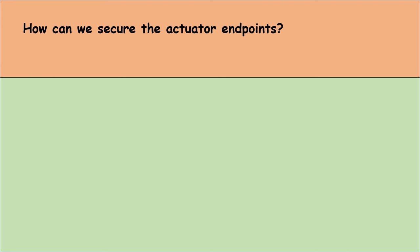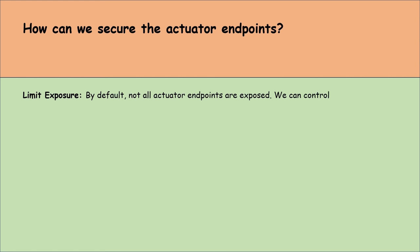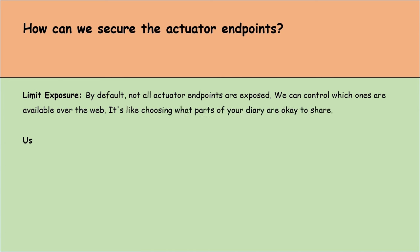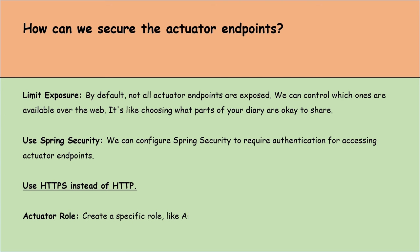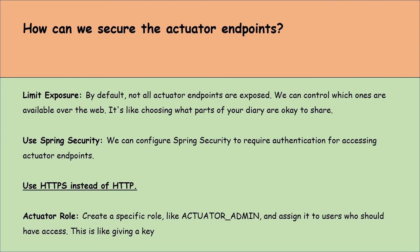How can we secure the Actuator endpoints? There are a few ways. First, limit exposure — by default, not all Actuator endpoints are exposed, and we can control which ones are available over the web. Second, use Spring Security — configure it to require authentication for accessing Actuator endpoints. Third, use HTTPS instead of HTTP since HTTPS provides more security. Fourth, create a specific role like 'actuator-admin' and assign it to users who should have access, like giving a key only to trusted people.